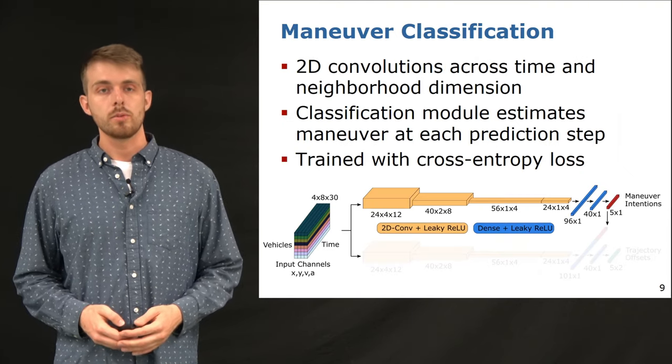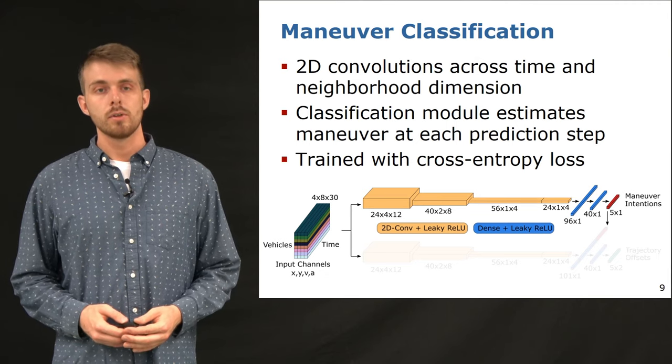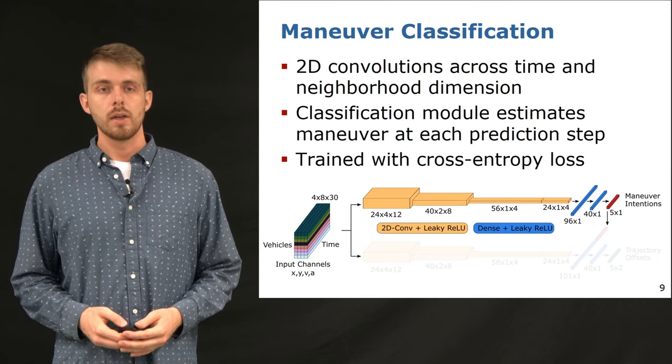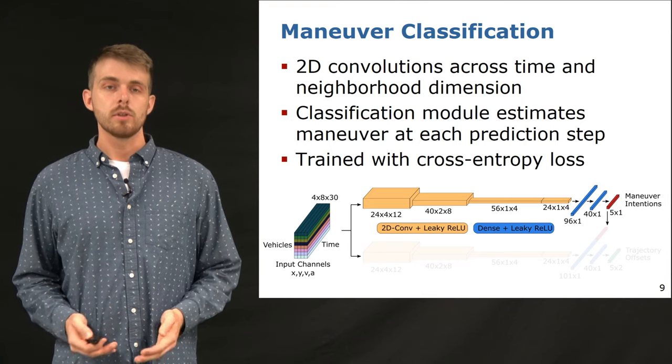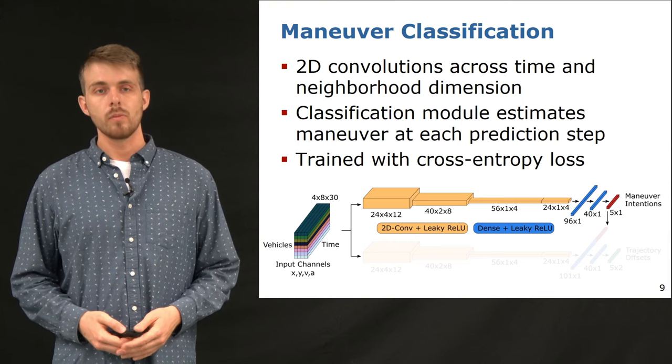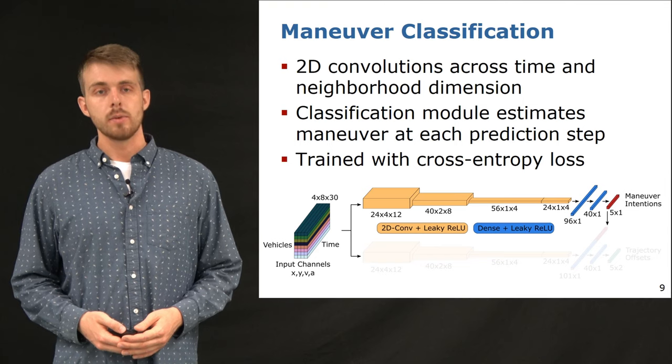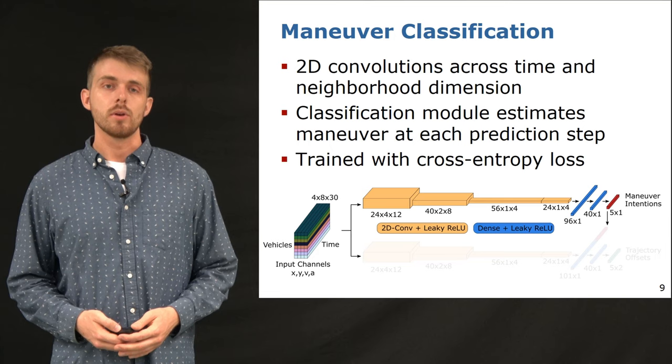Given the proposed 3D input tensor, the first step of our prediction approach is to estimate the future maneuver of the target vehicle. We use a series of 2D convolutional layers with varying kernel sizes and dilation rates to down-sample the feature maps while increasing the channel size. At the output stage, we use dense layers to output the estimated maneuver for each future time step. We supervise the network with a cross-entropy loss.